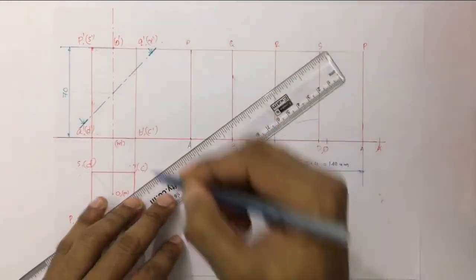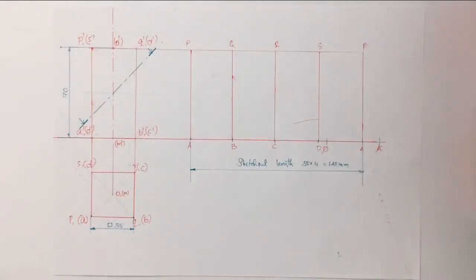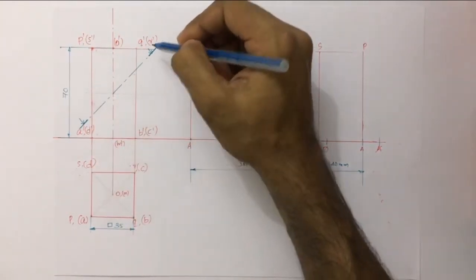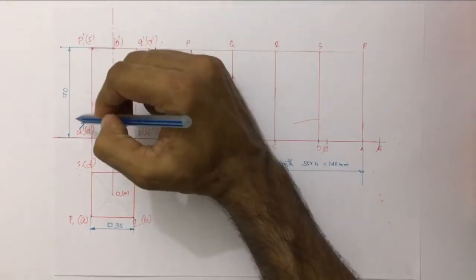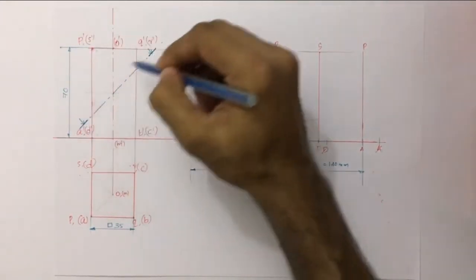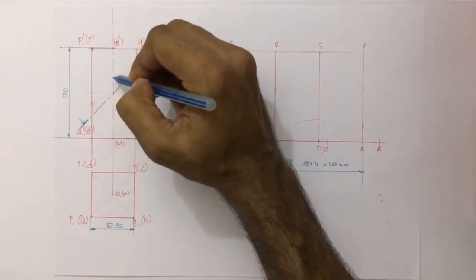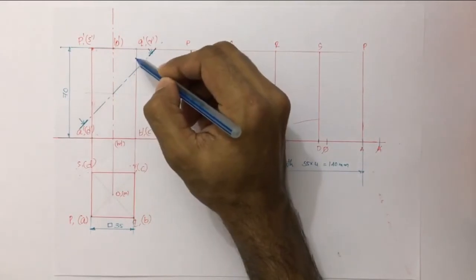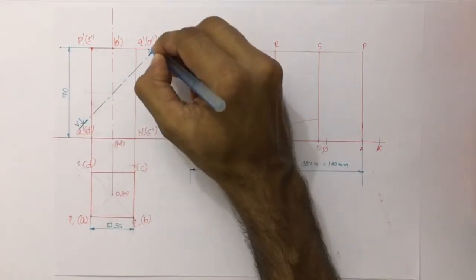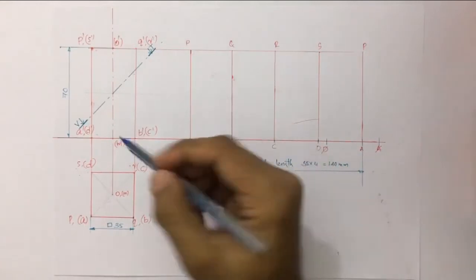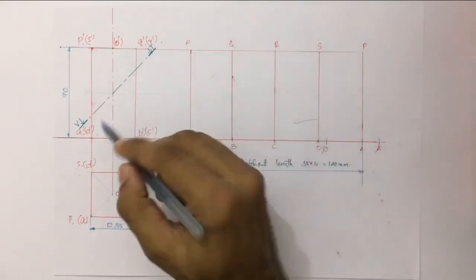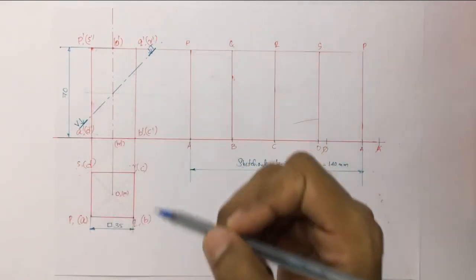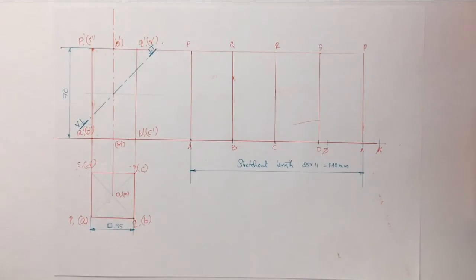The arrowhead indicates the viewer's direction, showing which portion of the section plane is removed. We name this as the vertical trace. The section plane appears as a front view line — it is the trace line — and the remaining portions are darkened.